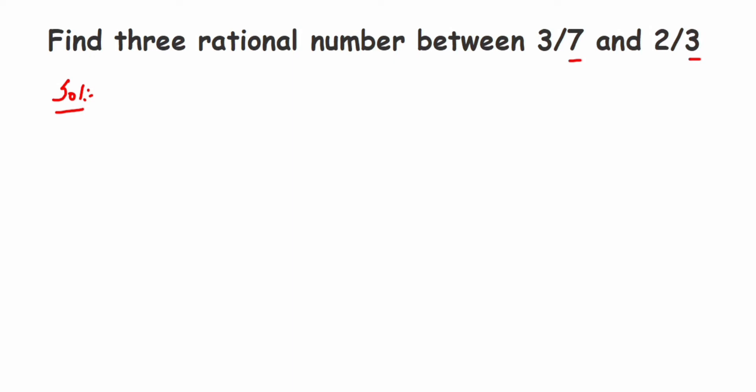They're asking only three rational numbers here, so let me write the numbers first. We have 3/7 and we have 2/3. Denominators are not same, so that's why we're taking LCM here. LCM of 7 and 3 is equal to 21.